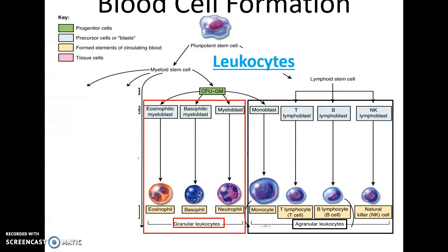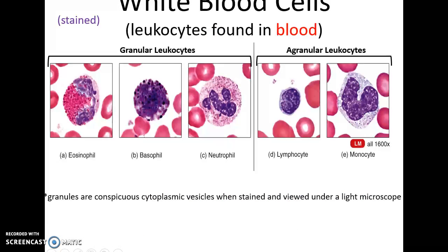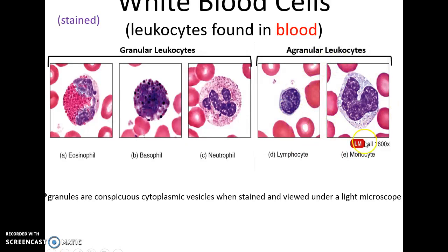Leukocytes, or white blood cells, can be broken down into granular leukocytes and agranular leukocytes. The granular leukocytes include eosinophils, basophils, and neutrophils — you can see little granules in their cytoplasm under a light microscope. With agranular leukocytes — lymphocytes and monocytes — you do not see those granules. Note that white blood cells are basically translucent under a light microscope, so the reason why they look colored is because stains have been used to dye them.